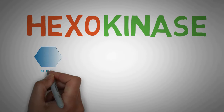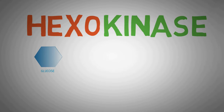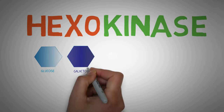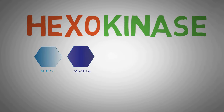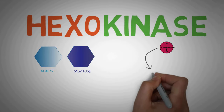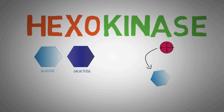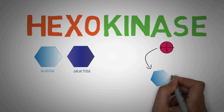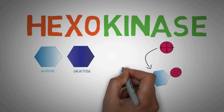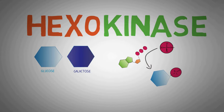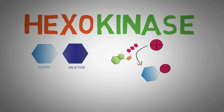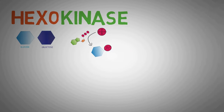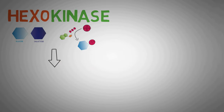Hexokinase — hex meaning 6 — indicates that these enzymes act on 6-carbon sugars like glucose and galactose. Kinases are enzymes that transfer a phosphate group from a high energy molecule to another molecule, which in this case is a phosphate group being transferred from ATP to glucose.